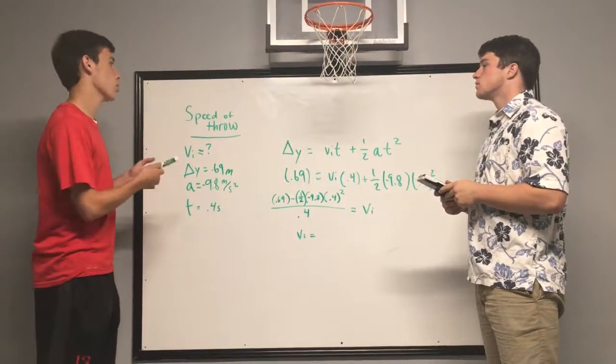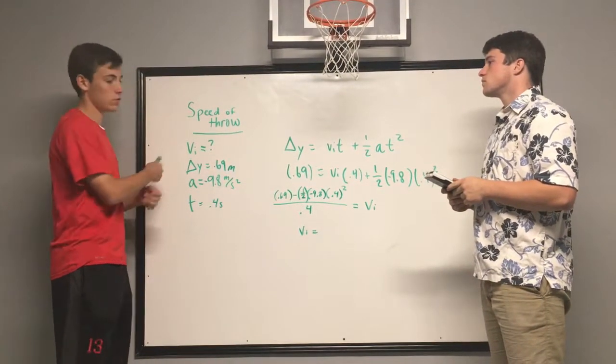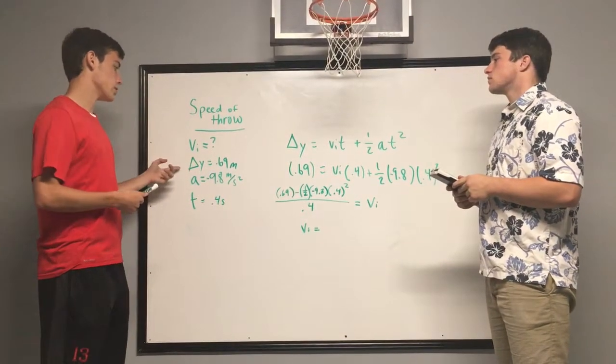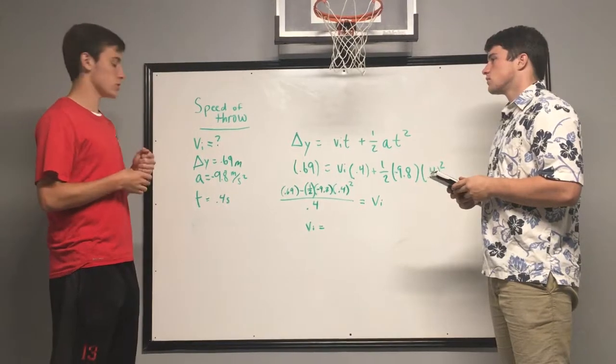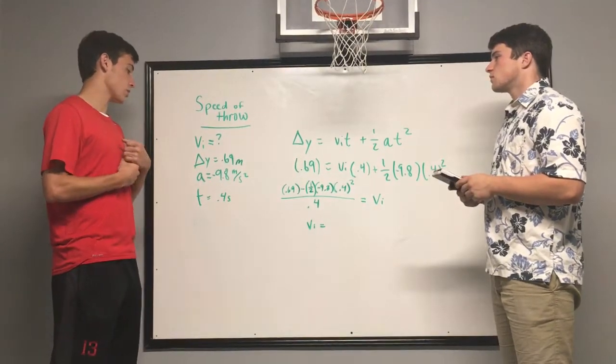When determining the speed of the throw, we were solving to find initial velocity. So we found the average height, which was 0.69 meters, the acceleration due to gravity, which is negative 9.8 meters per second squared.